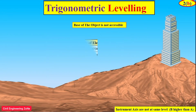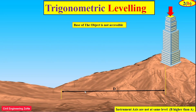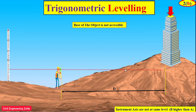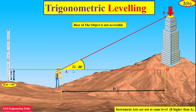Now if we are interested to find out the reduced level of the top of the building, practically in the field we cannot measure the horizontal distance because the base of the object is not accessible. This is why we have to set up the theodolite, note the reading on the benchmark, and note the angle of elevation from instrument station A to the top of the building.